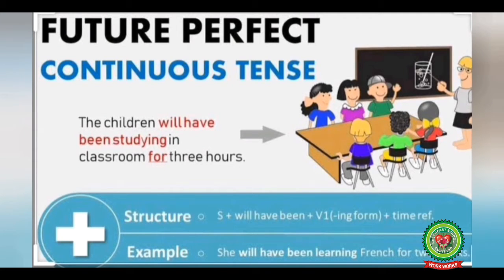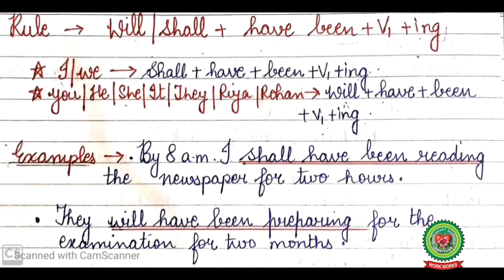The rule of future perfect continuous tense is: will/shall plus have been plus V1 plus ing. Keep in mind that with 'I' and 'we' we always use 'shall' as a helping verb, but with any other subject like you, he, she, it, they, Ria, Rohan, we use 'will' as a helping verb.